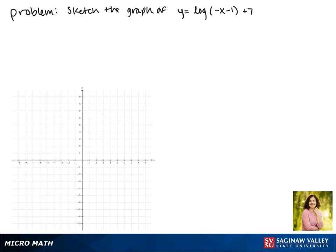Today we'll be graphing the function y equals the log of negative x minus 1 plus 7. We'll start by rewriting what's inside of our log so that x is by itself. This gives us y equals the log of the negative of x plus 1 plus 7.